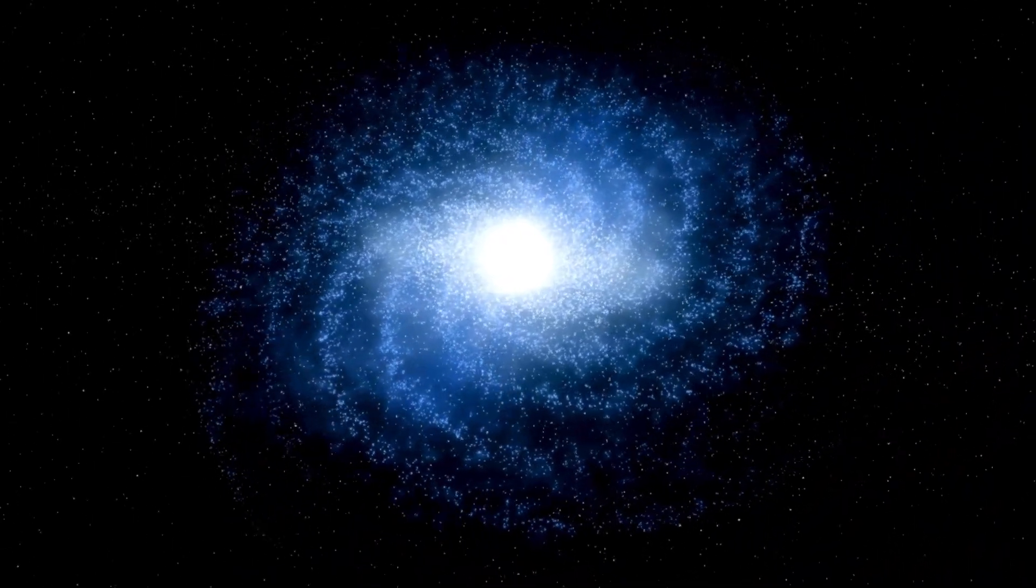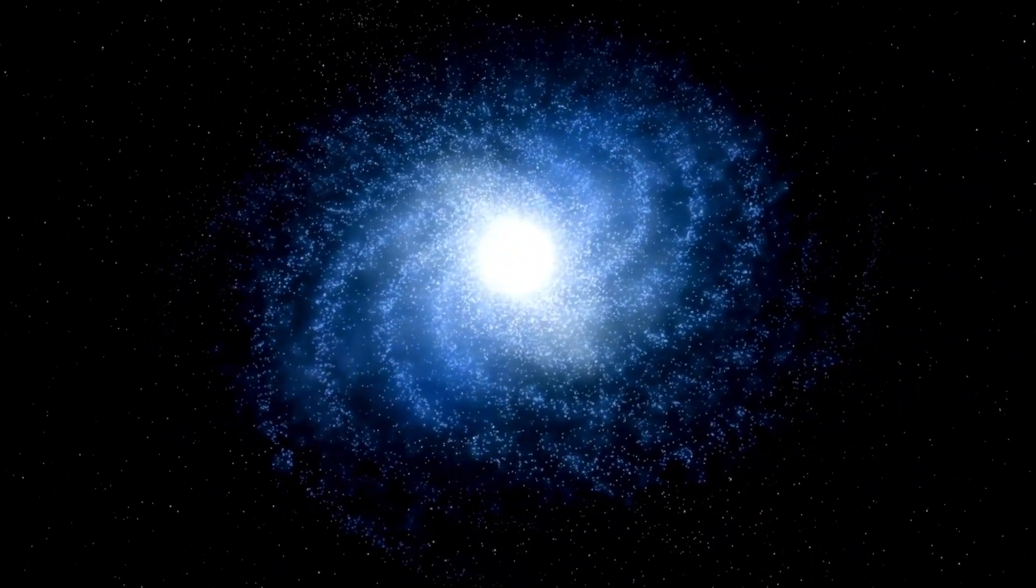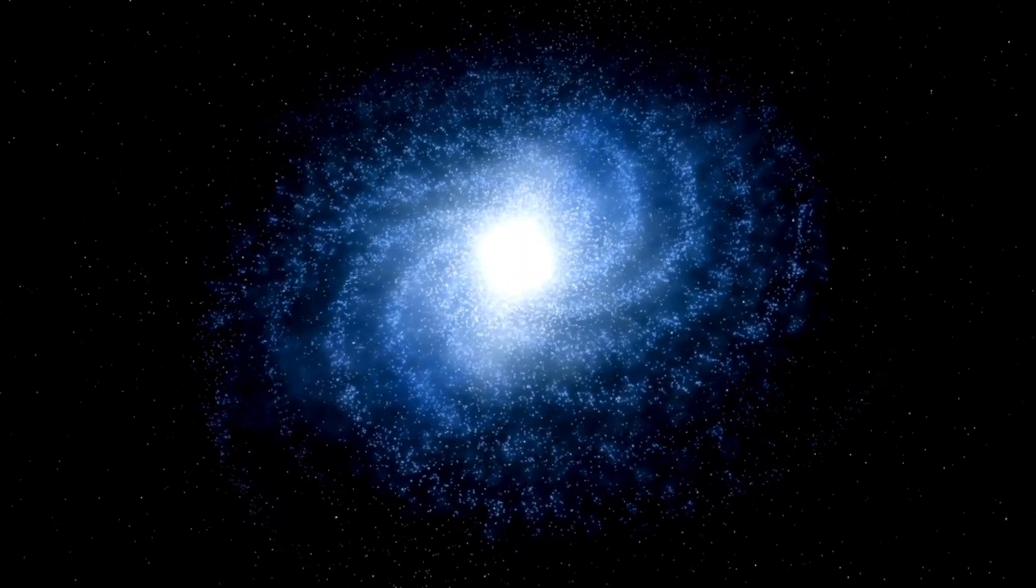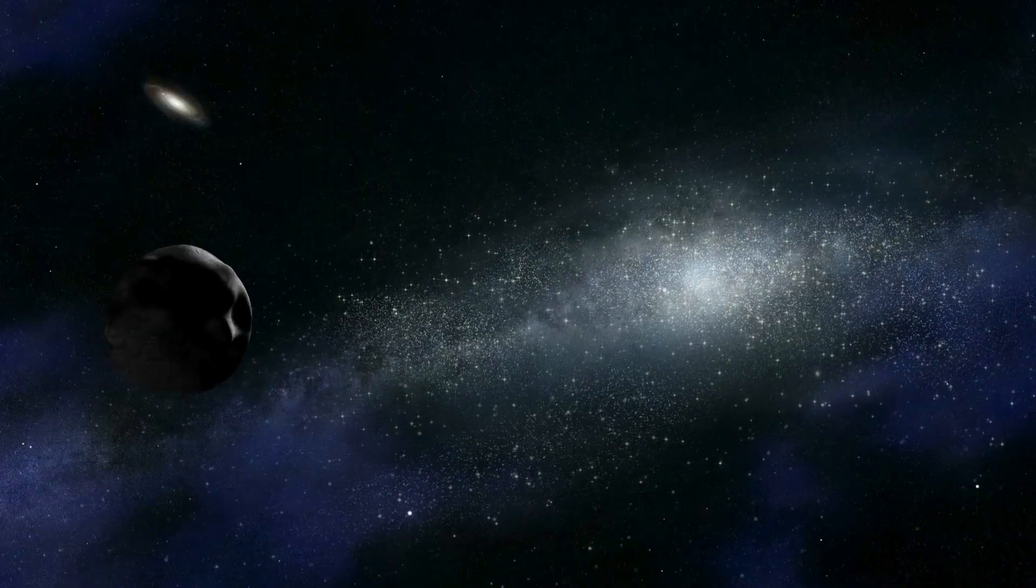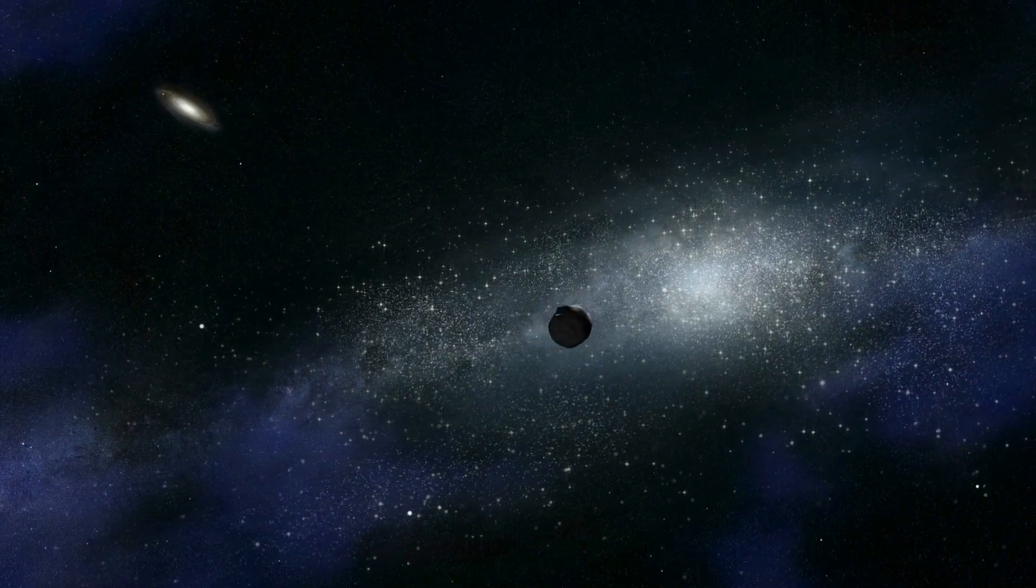Now here's where things get even more interesting. The JWST has provided the clearest view yet of Proxima b, and it has revealed some startling features. For one, the planet is about 30% more massive than Earth, which means it has a stronger gravitational pull.